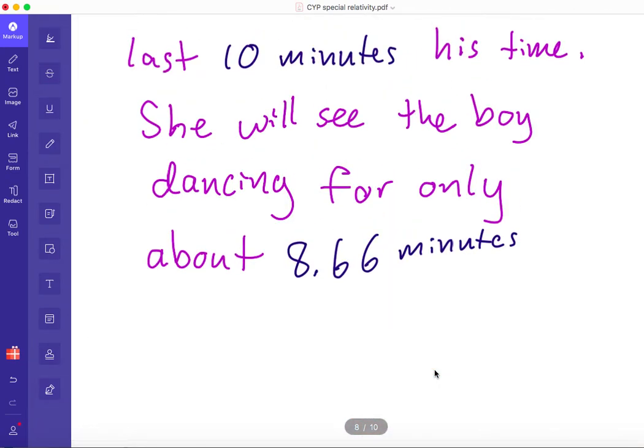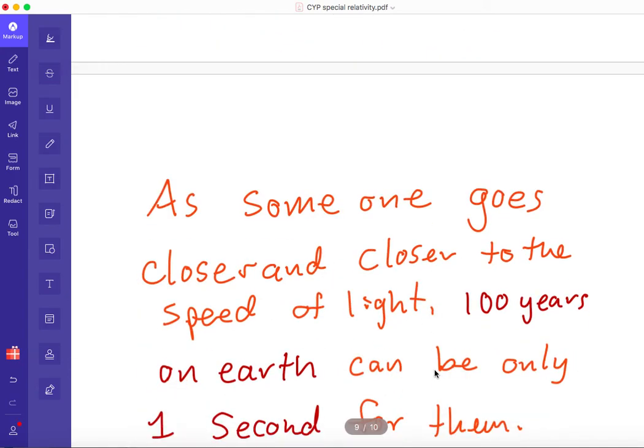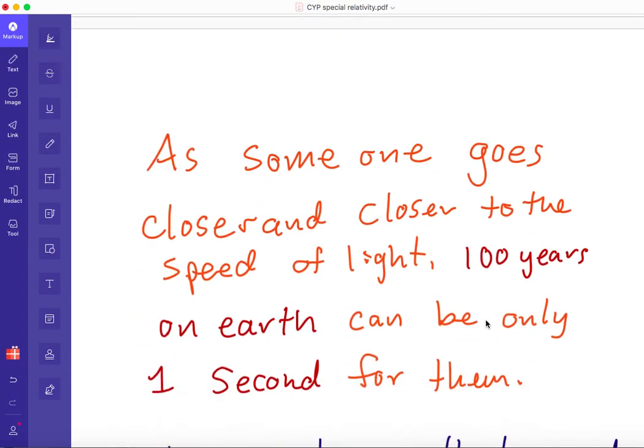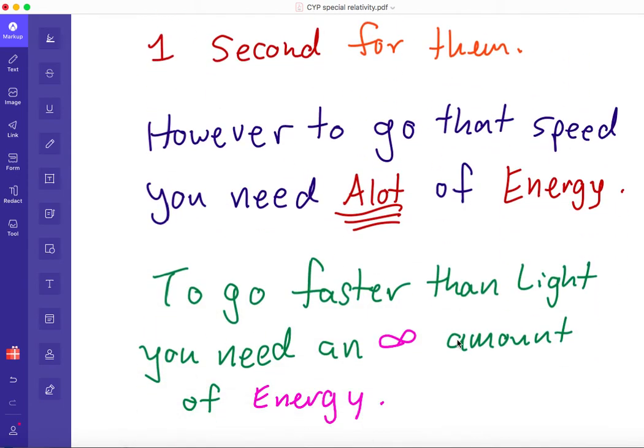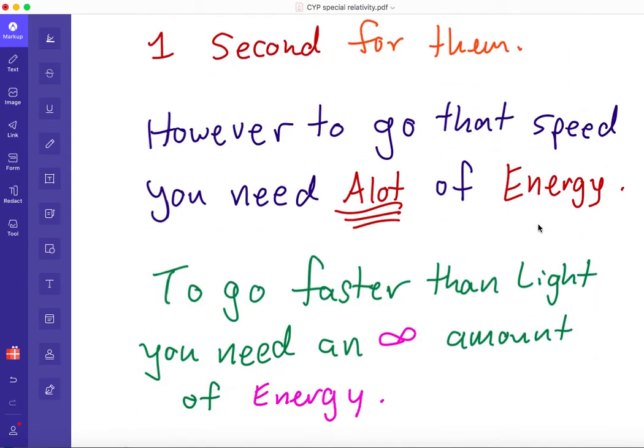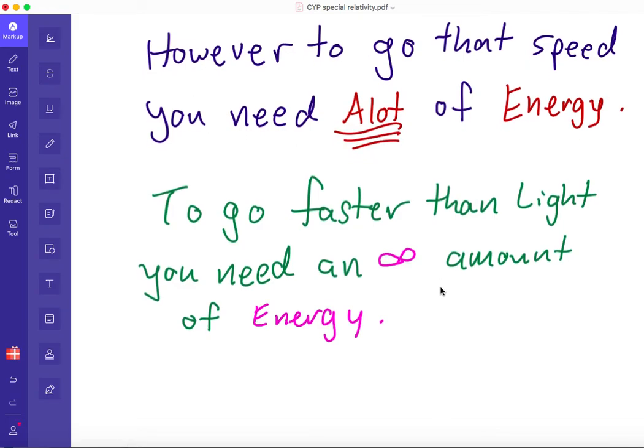And the faster you go, the slower time ticks down. So if you go closer and closer to the speed of light, a hundred years on Earth might only be one second for you. And essentially time would freeze. But to go at that speed, you need a lot of energy. And in order to go faster than light, you need an infinite amount of energy. So you can't go faster than the speed of light. Even if you have all the energy in the entire universe, you can't go faster than the speed of light. So that is a maximum speed that we could travel, which is pretty weird when you think about it.